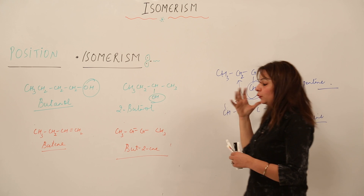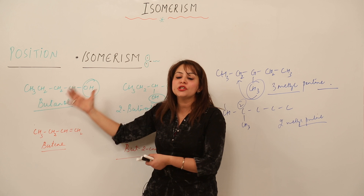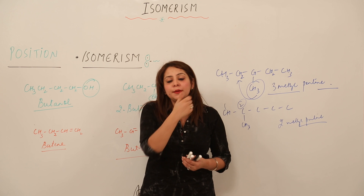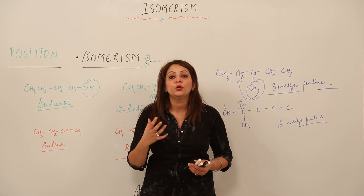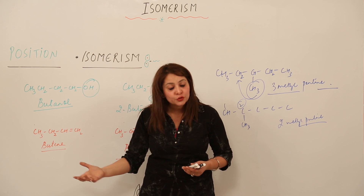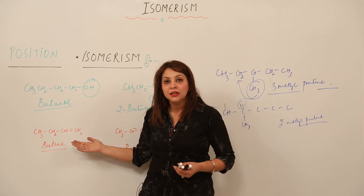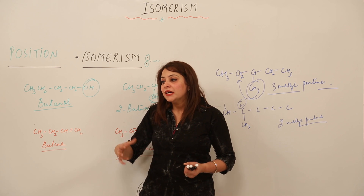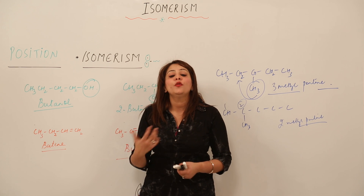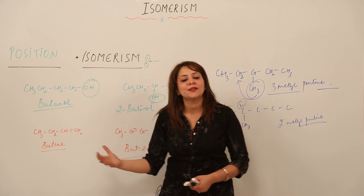In position isomerism, the compounds have the same molecular formula but differ in the position of the substituent, the position of the functional group, or the position of a double or triple bond. This means they can differ in the primary suffix, secondary suffix, or prefix of their IUPAC names. That is what position isomerism is.